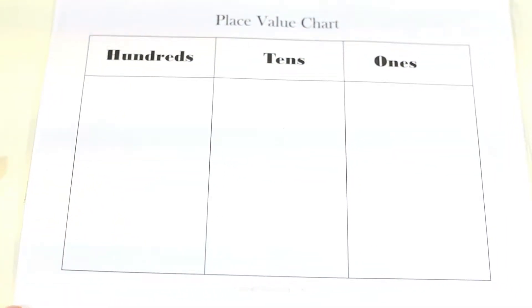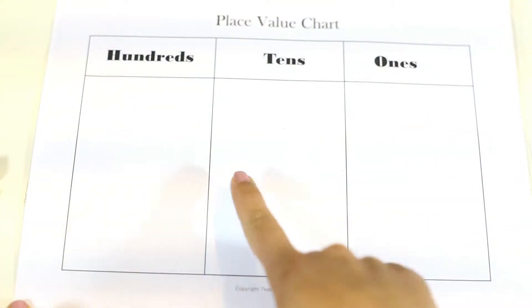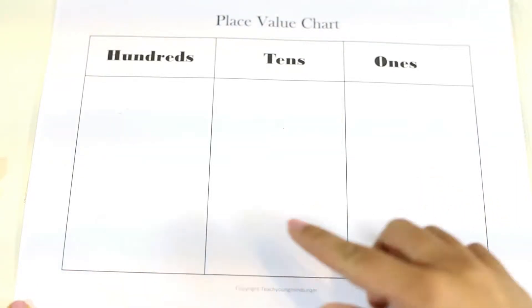The first activity I'll be showing you allows the learner to understand what ones, tens, and hundreds place value means, what each digit means.